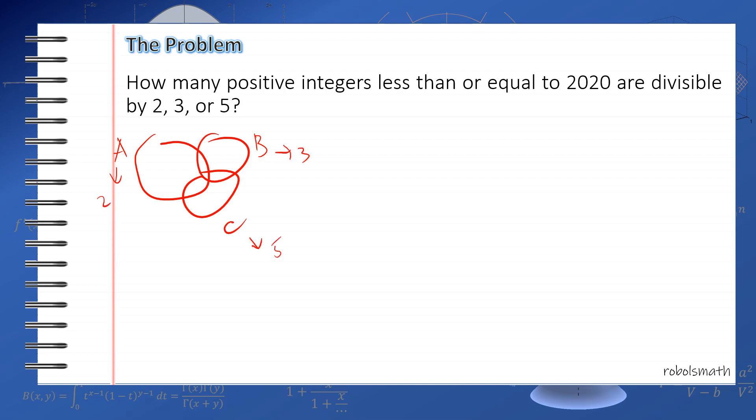Again, how many elements in A? We solved this earlier, it's 2020 over 2, which is 1010. The contents of B is the closest integer to 2020 over 3, which is 673. The cardinality of C, that's 2020 over 5, so this is 404.